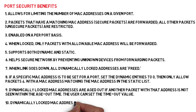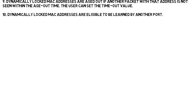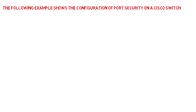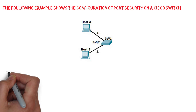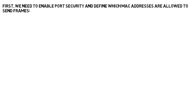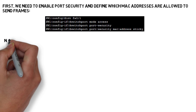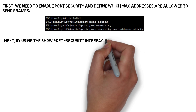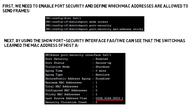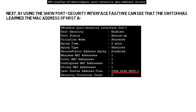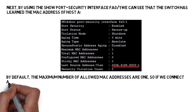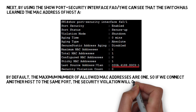10. Dynamically locked MAC addresses are eligible to be learned by another port. The following example shows the configuration of port security on a Cisco switch. First, we need to enable port security and define which MAC addresses are allowed to send frames. Next, by using the 'show port-security interface FA0/1' command, we can see that the switch has learned the MAC address of host A. By default, the maximum number of allowed MAC addresses is 1, so if we connect another host to the same port, a security violation will occur.